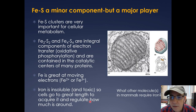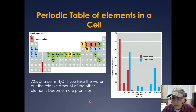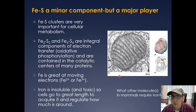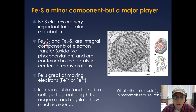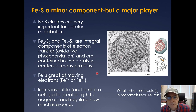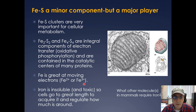Iron-sulfur is a pretty minor component when you factor in the amount within a cell, but it's actually a major player. Looking at an EM of mitochondria, the iron-sulfur clusters are very important for cellular metabolism. There are two main types: 2Fe-2S or 4Fe-4S. These are integral components of electron transfer and oxidative phosphorylation in the mitochondria, and iron is great at moving electrons because it can exist in a +2 or +3 oxidation state.